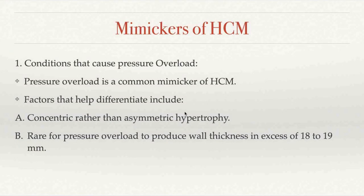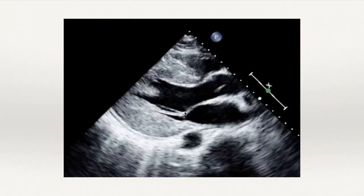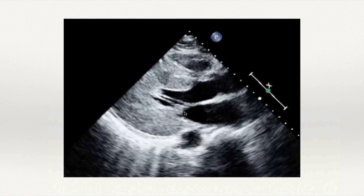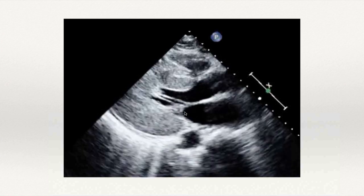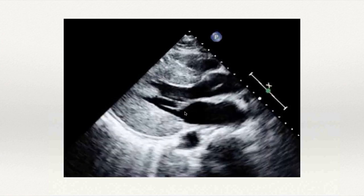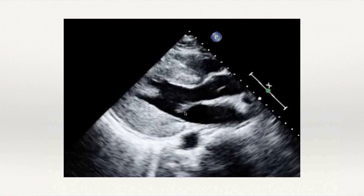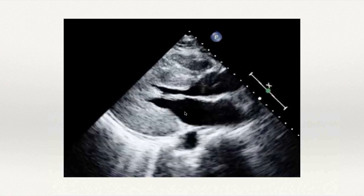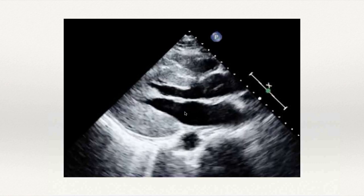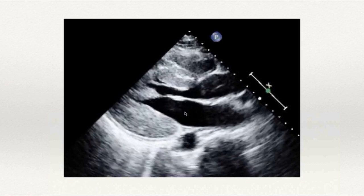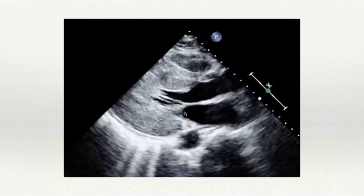Conditions that mimic hypertrophic cardiomyopathy: the most common are conditions causing pressure overload — usually hypertension, but aortic stenosis can cause it as well. Factors that help differentiate: in pressure overload conditions, you mostly have concentric rather than asymmetric hypertrophy, and it's rare for pressure overload to produce wall thickness in excess of 18-19 mm. In HCM, the diagnostic cutoff is 15 mm, but most patients have upwards of 20 mm. A loop shows severe concentric hypertrophy due to hypertension, with all walls symmetrically involved.